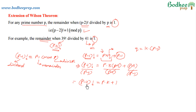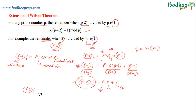We can notice that if (p-2)! is the dividend and p is the divisor and 1 is the remainder, then k is the quotient. So when (p-2)! is divided by p, the remainder is 1. That is what the extension of Wilson's theorem states: (p-2)! ≡ 1 (mod p). In the next video, we will see some examples where we apply the logic of Wilson's theorem to get the answer.